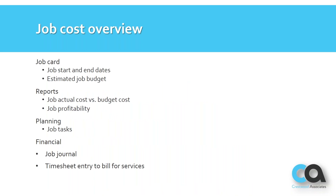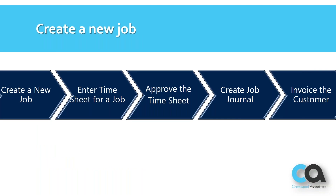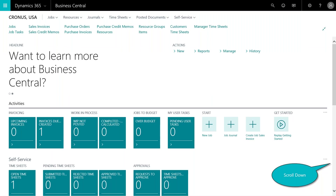Some of the entities we're going to look at in Business Central include the job card, which has your standard master data. It also has a planning section with your activities and tasks, including resources assigned to that job. There are out-of-the-box reports for actuals versus budgeted to give you profitability insight, and a job journal where you recognize costs and then transfer them to invoice your customers.